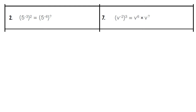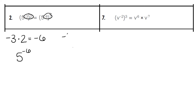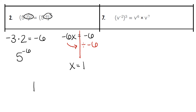In problem number 2, we start off by multiplying our two exponents: negative 3 times 2, which gives us a negative 6. Our final answer would be 5 to the negative 6th power. We want that same answer on the other side — negative 6 times what gives us negative 6? We do the opposite operation and divide by negative 6. Two negatives give us a positive, and 6 divided by 6 gives us 1. The missing exponent is a 1, represented by the letter O at the bottom.